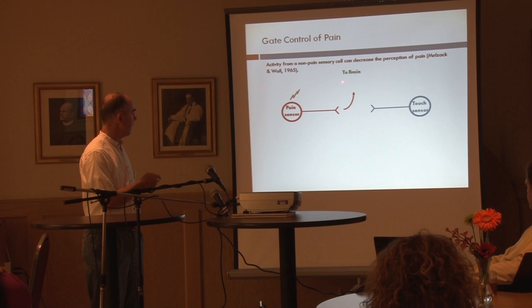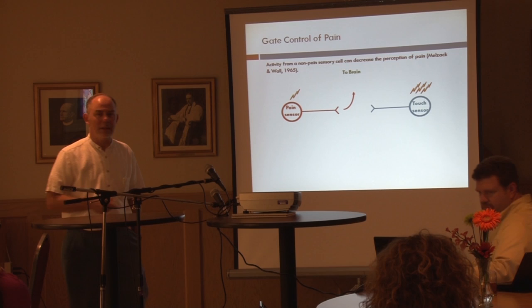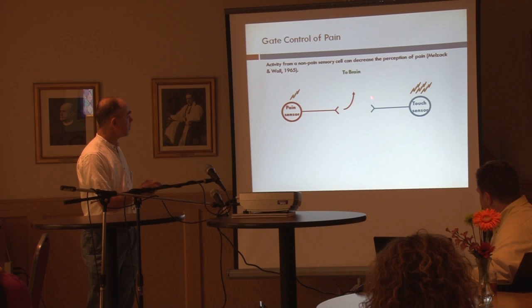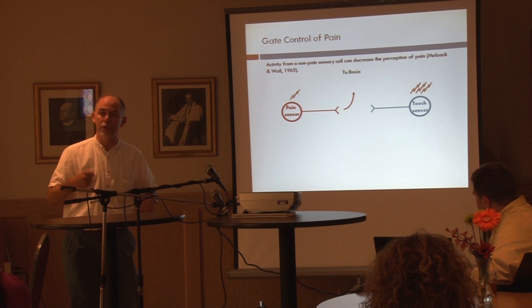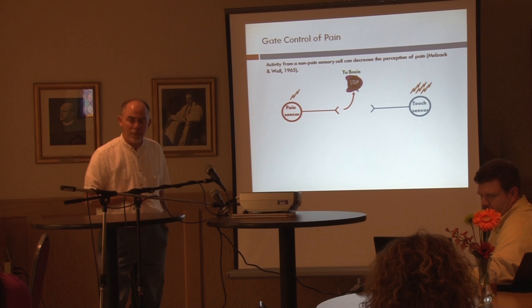When a pain sensor is activated, a signal is transmitted up to the brain. But if you activate a non-pain sensory neuron, such as a touch sensor, you can actually ameliorate or even stop this pain signal from reaching the brain — you can decrease our perception of pain.